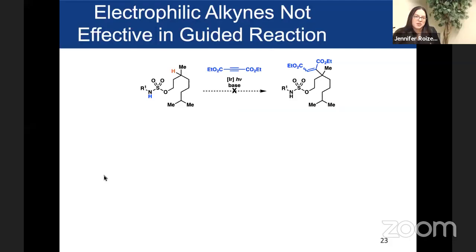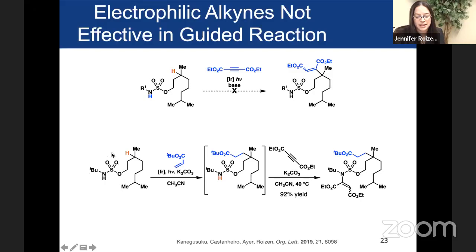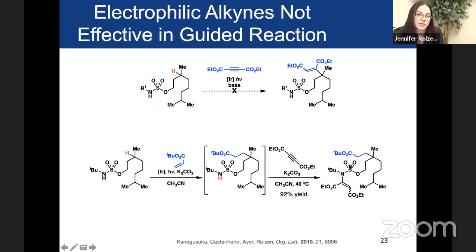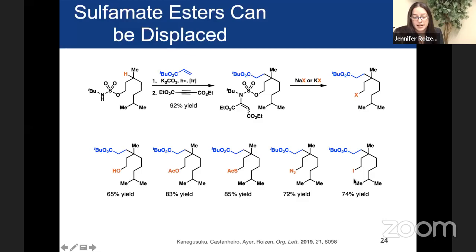One thing we discovered was that if we used an electron-deficient alkyne, we didn't vinylate at carbon — instead we engaged in vinylation at nitrogen. This was actually a gift, because we were trying to identify a strategy for cleaving the sterically encumbered sulfamate ester. We discovered that without isolating the intermediate, we could take our Giese process, then run an N-vinylation reaction and identify an excellent group for displacement. Upon displacement we could recover an alcohol — making a net four-step process with three isolations to get difunctionalized products — and we could also install an acetate, thioacetate, azide, or iodide.